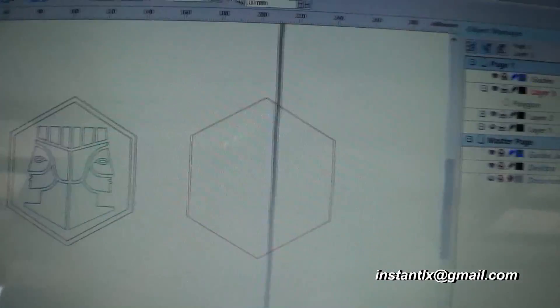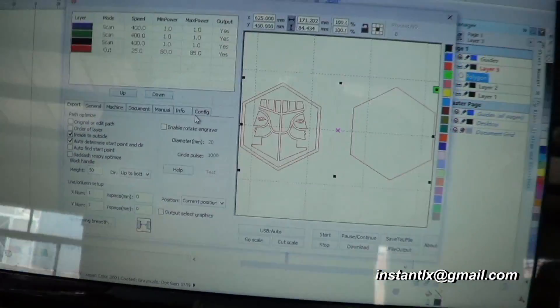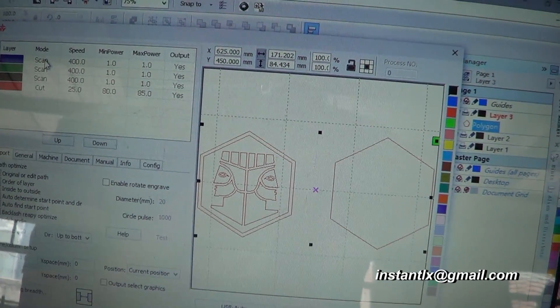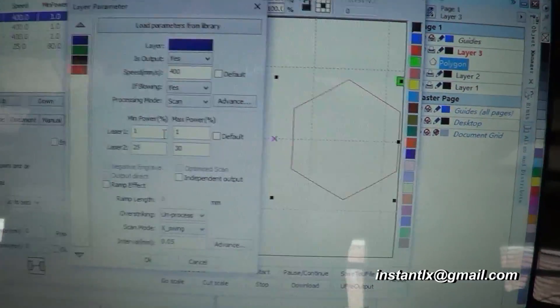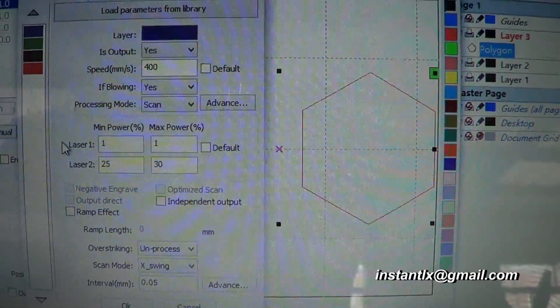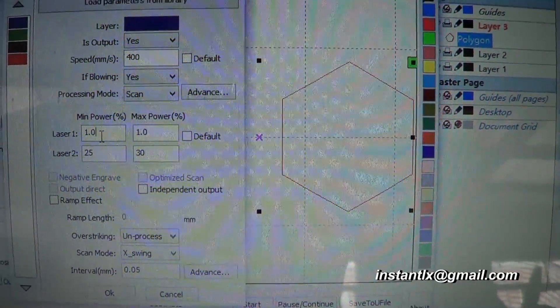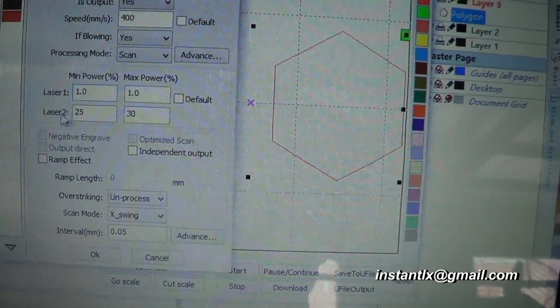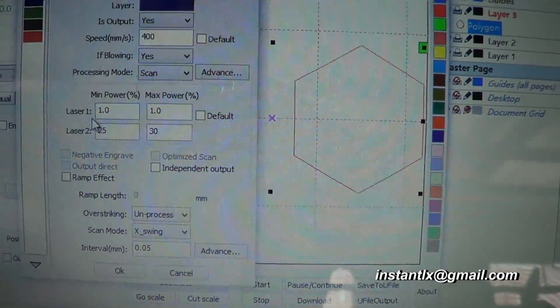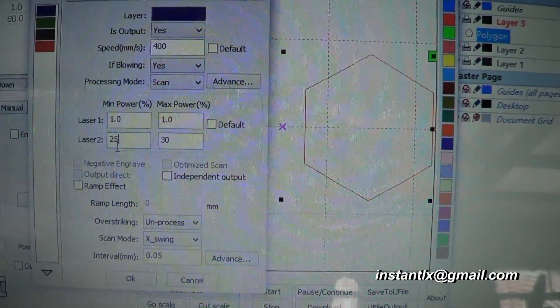Then we open the laser engraving extension in CorelDRAW. This is also the same as the laser world software. Pay attention here, there is no check box to disable laser 1 so we set 1 here. You cannot set 0 here because 0 means equal to laser 2. So we set 1% for laser 1 to disable it. In this setting we will just use laser 2 to work.